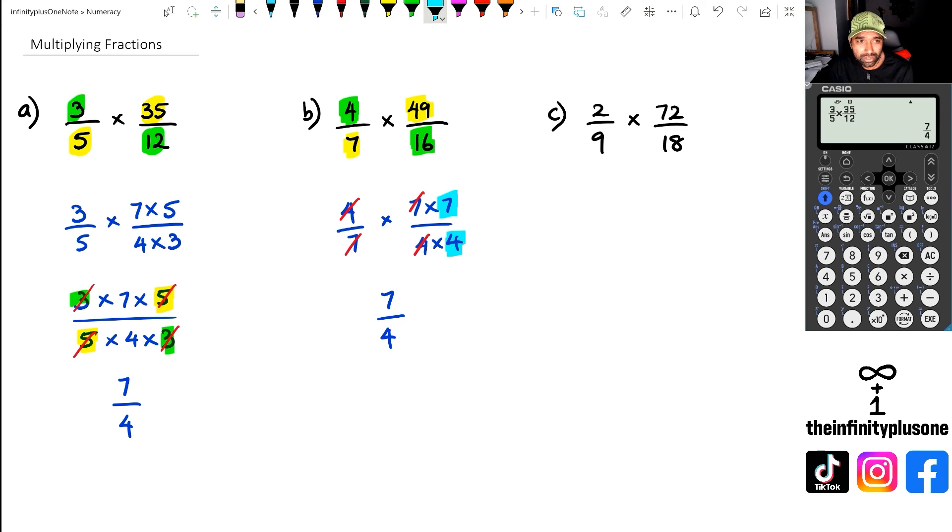So like I said, in question A, I kind of showed you folks the long way of doing it. Question B is kind of like the medium way of doing this. Question C, I'm going to try and do this a really quick way, because what you can do is you can look at these two numbers and see where the numbers are connected.